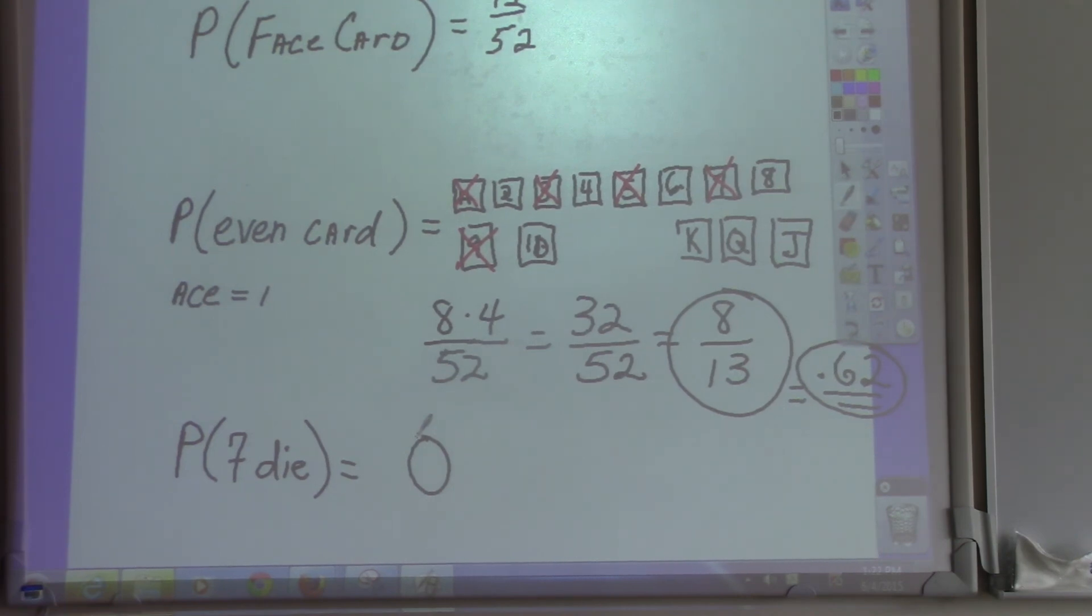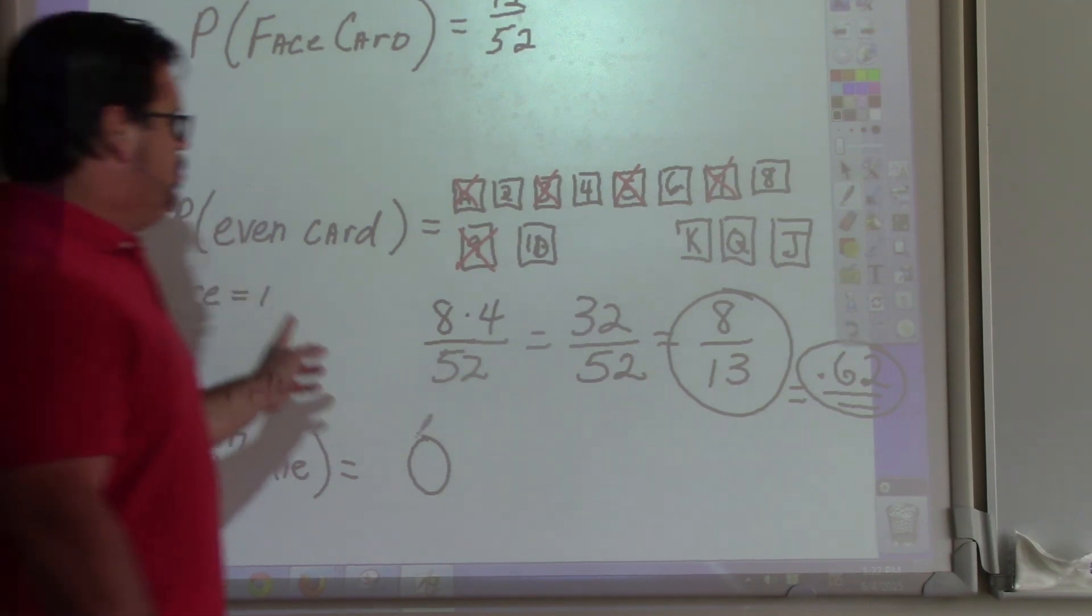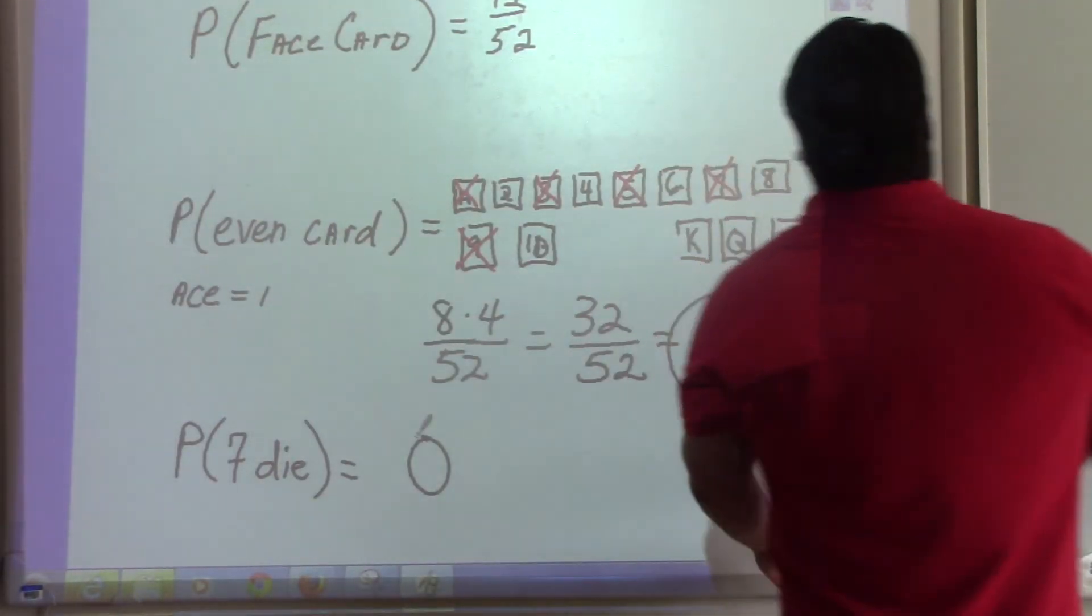Now if we bring a deck of cards in here and I give each one of you a deck of cards, and I tell you to draw ten times and see if you can get a face card or even card, then you would be doing a physical probability. See the difference? Any questions on this?